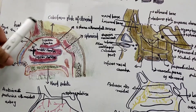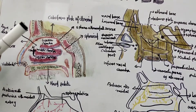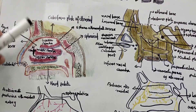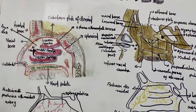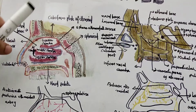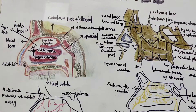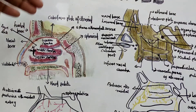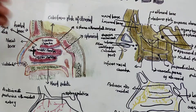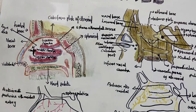The lateral wall of the nose separates the nose from the orbit above, the maxillary sinus below, the nasolacrimal canal, and also the lacrimal groove.